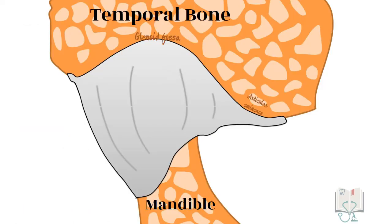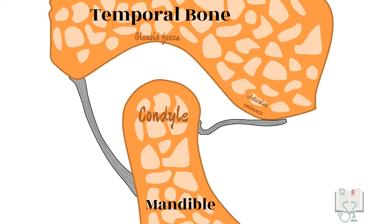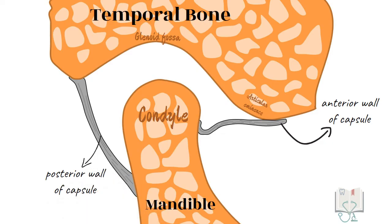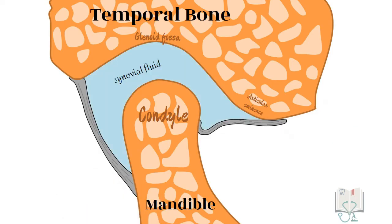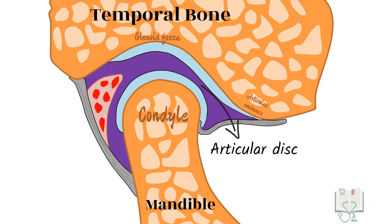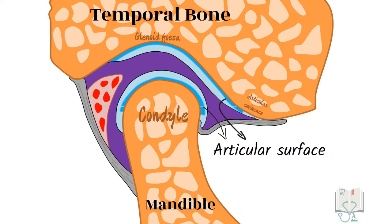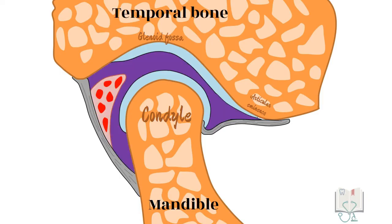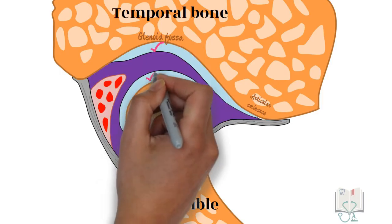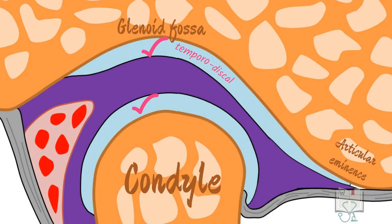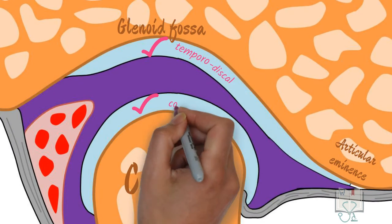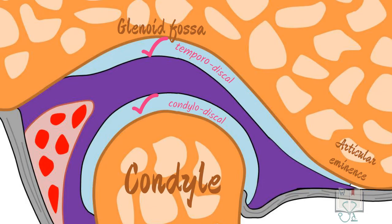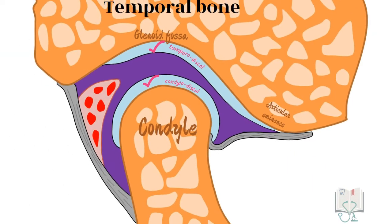To study the internal structure of the temporomandibular joint, we will peep inside the capsular ligament. The various structures seen within are synovial fluid, synovial membrane, articular disc, and articulating surfaces. The articular disc is located between the two bones and divides the joint space into upper and lower compartments: the temporodiscal compartment, which allows sliding movement, and the condylodiscal compartment, which allows hinging or rotational movement. Both compartments are filled with synovial fluid.